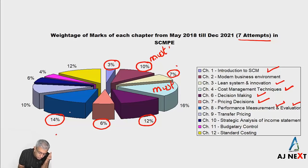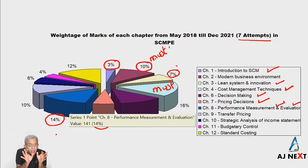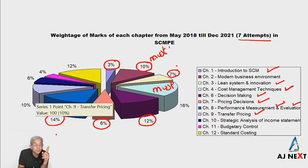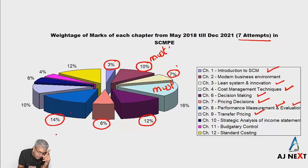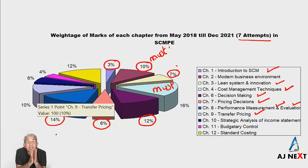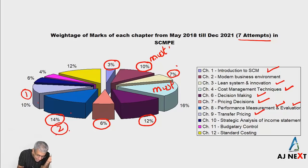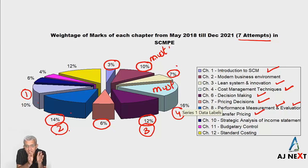Out of 985 total marks, Chapter 8 has been asked for 141 marks — that is a huge thing. Apart from that, one of the hot favorite topics of the institute is Transfer Pricing, which has been asked for 100 marks out of 985 — that is 10%. So if you want a sure-shot chapter that will come, it is these: Performance Measurement, Transfer Pricing, and Decision Making.